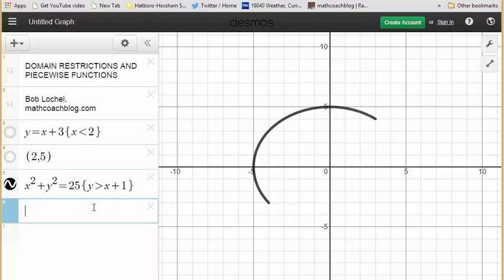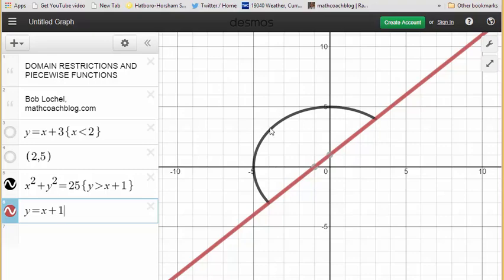It's only graphing the part of the circle that is above that line, because that is the restriction I placed upon it. So those are domain restrictions.